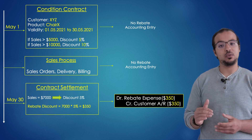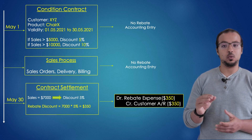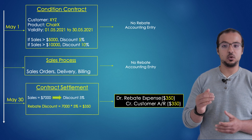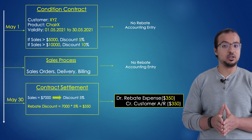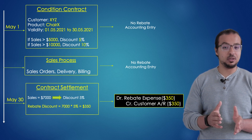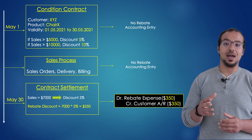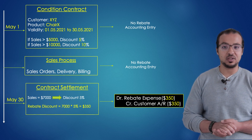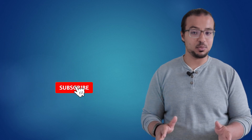Then at the end of the contract, we do the contract settlement. Here we see the number he achieved, and here we have a financial entry. In my example, the financial entry will be a debit to the rebate expense for 350 and a credit to the customer accounts receivable balance for 350. So far, the process is very simple.